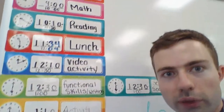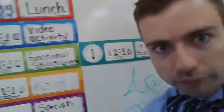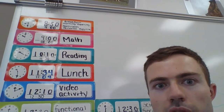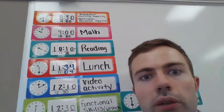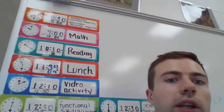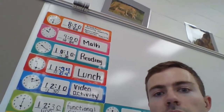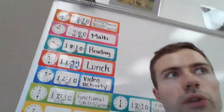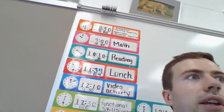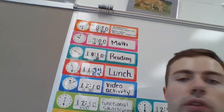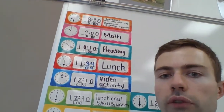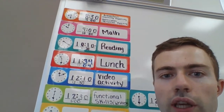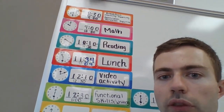So we start out at 8:30. We have our breakfast and morning meeting. We do our bathroom trips, then we start math into our small group rotations, which are composed of IEP goal work as well as L3 skills games. And then we have reading, which is the same format that we use. We have a snack in between the math and the reading.